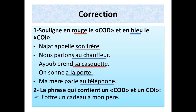Pour la deuxième question, la phrase qui contient un complément d'objet direct et un complément d'objet indirect : je vous propose ici une phrase. J'offre un cadeau à mon père. « Un cadeau » — j'offre quoi ? J'offre un cadeau — donc « un cadeau », c'est un complément d'objet direct. J'offre un cadeau à qui ? À mon père. « À mon père », c'est un complément d'objet indirect.